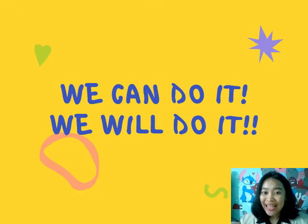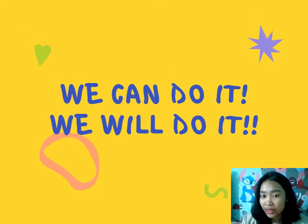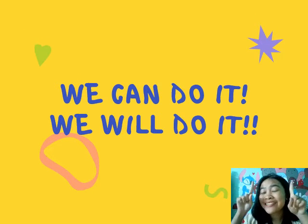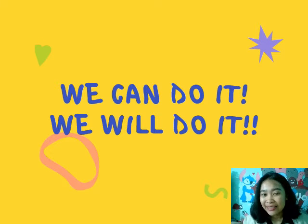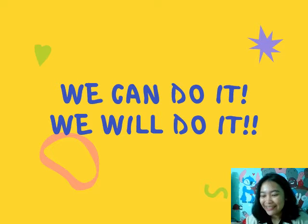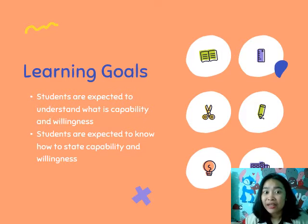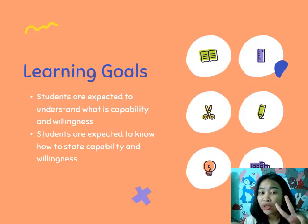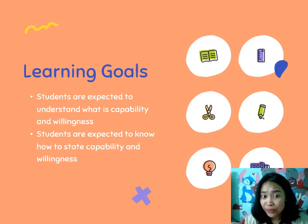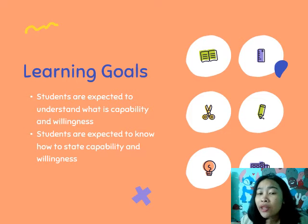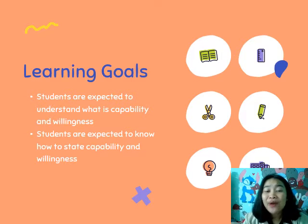Let's take a look at these sentences: 'We can do it' and 'We will do it.' These are real examples of stating capability and willingness. There are two learning goals for today's lesson: all of you are expected to understand what capability and willingness are, and to know how to state capability and willingness.